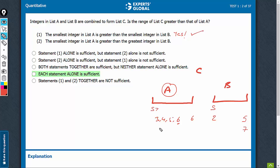Look at statement 2, same approach. This is saying that the smallest integer here is greater than the greatest integer in list B. So if this is the greatest integer, the smallest integer here is greater than the greatest integer here.